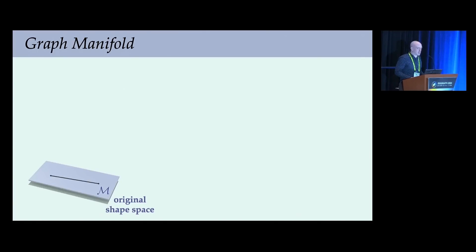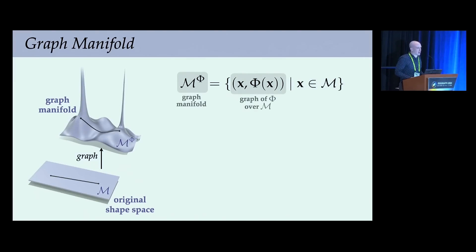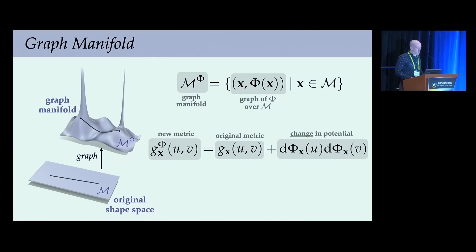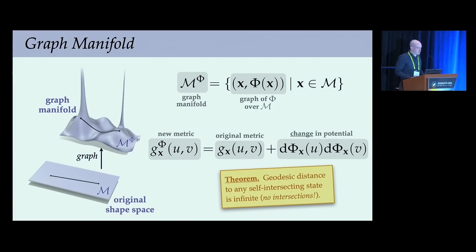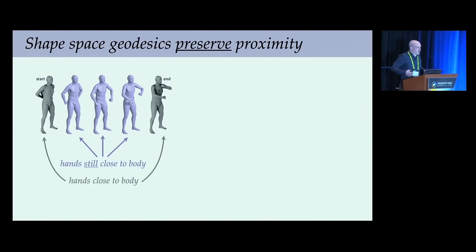Starting with our initial shape space M, we graph the potential phi, defining a new manifold M_phi where each point is a pair (x, phi(x)) for all x in M. Pulling back the ambient metric to M gives a new Riemannian metric G_phi equal to the original metric plus a term measuring the change in the repulsive potential. This prevents intersections: the geodesic distance to any intersecting state is infinite. At the same time, we don't penalize motions that maintain roughly a constant degree of self-proximity—if my hands are close to my body at the beginning and end, it's fine if they remain about as close throughout.